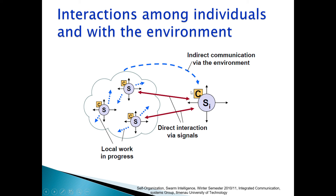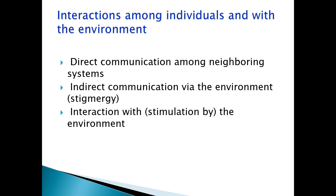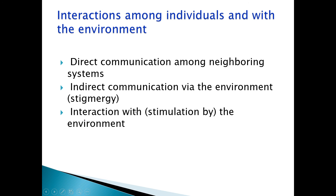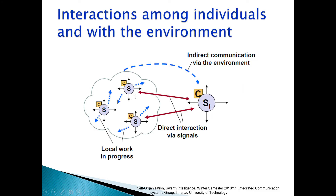Looking at the diagram, all three types of interactions are shown. Direct communication is local work in progress among neighboring systems — direct one-to-one communication between neighboring systems. Indirect communication via the environment is stigmergy — stimulation by work. Direct interaction with the environment is via signals. This is the second basis for self-organization: individuals must interact among themselves and with the environment for self-organization to be achieved.